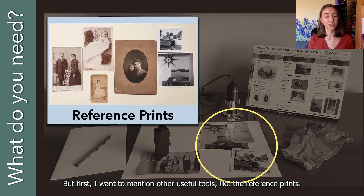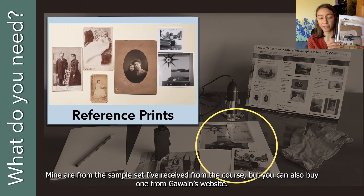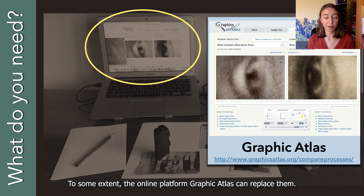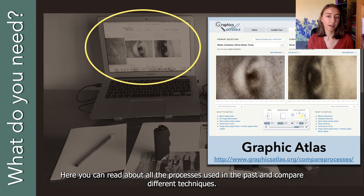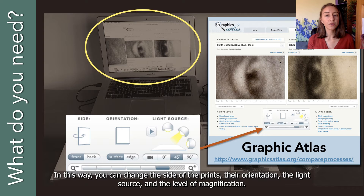I will explain how I use this chart in the following slides, but first I want to mention other useful tools and techniques, like reference prints. You can exercise your identification skills on them and always compare their characteristics with those of the print you are trying to identify. Mine are from the sample set I received from the course, but you can also buy one from Gawain's website. To some extent, the online platform Graphic Atlas can replace them. Here you can read about all the processes used in the past and compare different techniques. By selecting two different processes on each side, you can analyze them using the navigation tool.